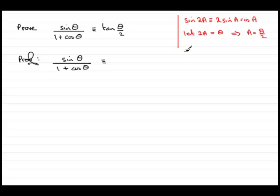So our formula up here becomes the sine, well instead of 2a we end up with theta. And it's identical to 2 sin of a, which is half theta or theta over 2, times cos theta over 2.